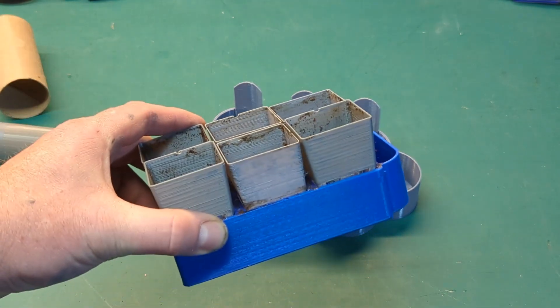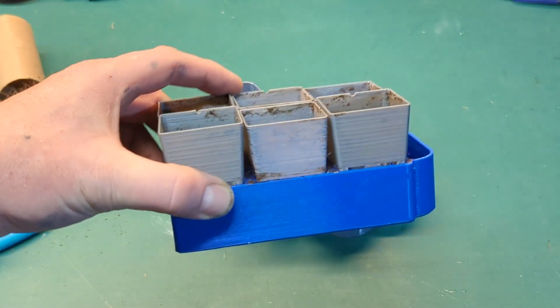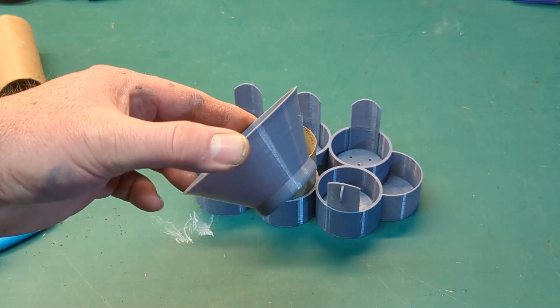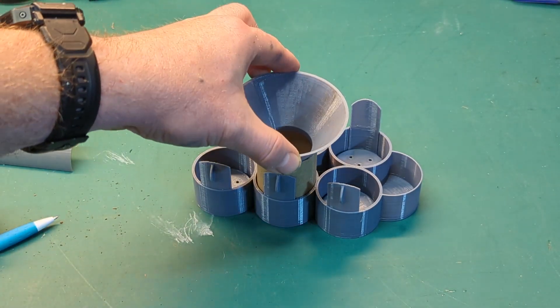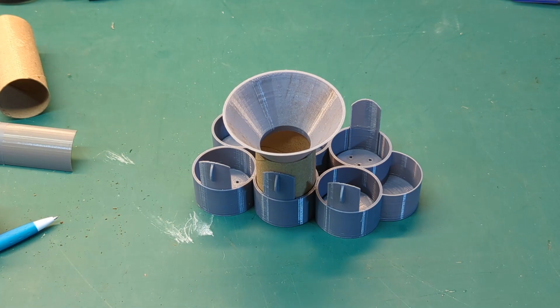One of the struggles I had with the old design was getting dirt down inside these pots without making a total mess. So I also have a funnel that fits the top of a toilet paper tube perfectly and it allows you to fill it without making a major mess.